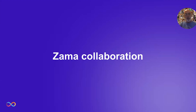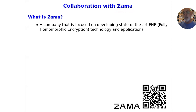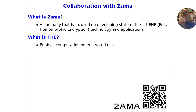I'm Victor Shoup. I'm a researcher at DFINITY. I'm going to talk about a collaboration between DFINITY and Zama, a research collaboration. Zama is a company that's focused on developing FHE technology. FHE stands for Fully Homomorphic Encryption, which at a super high level enables computation on encrypted data. In a little bit more detail, it works as follows: a bunch of users — Alice, Bob, and others — encrypt messages. So they encrypt M1 and get a ciphertext C1. Somebody else might encrypt M2 and get ciphertext C2.